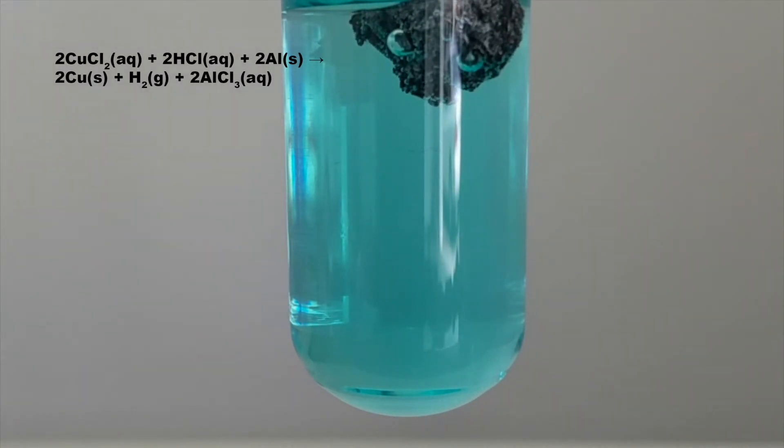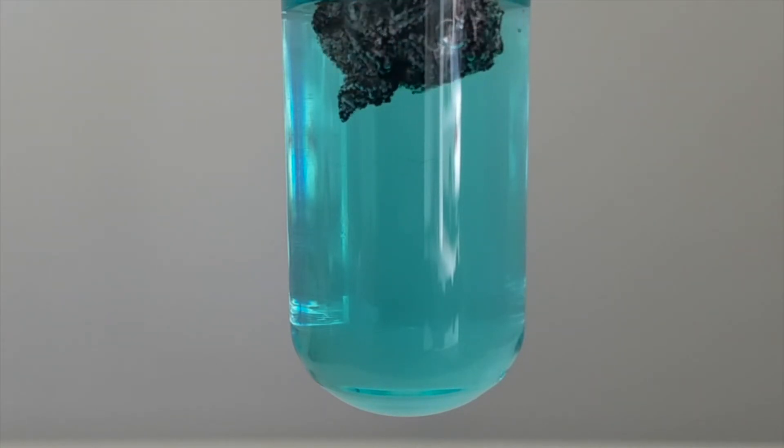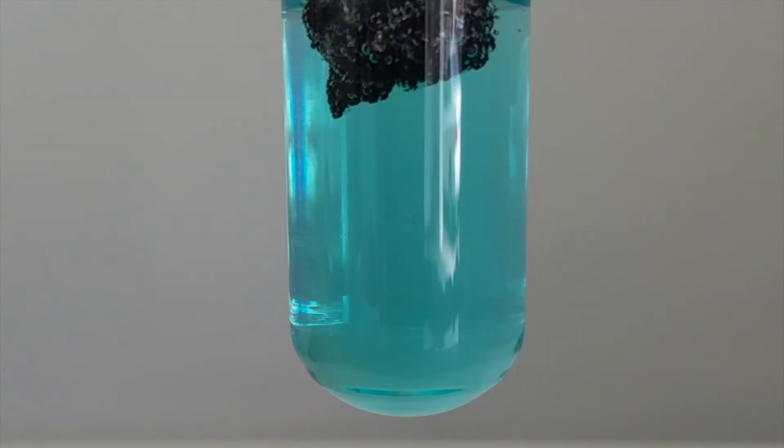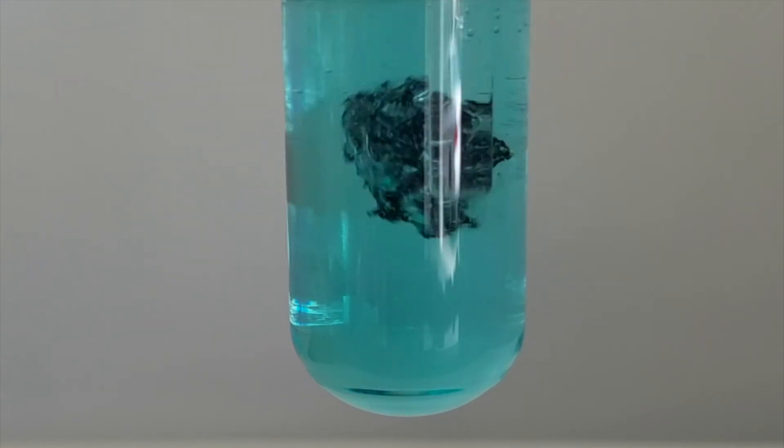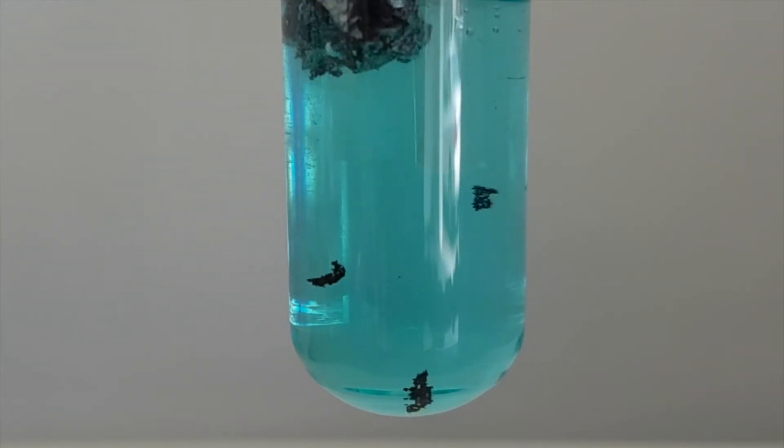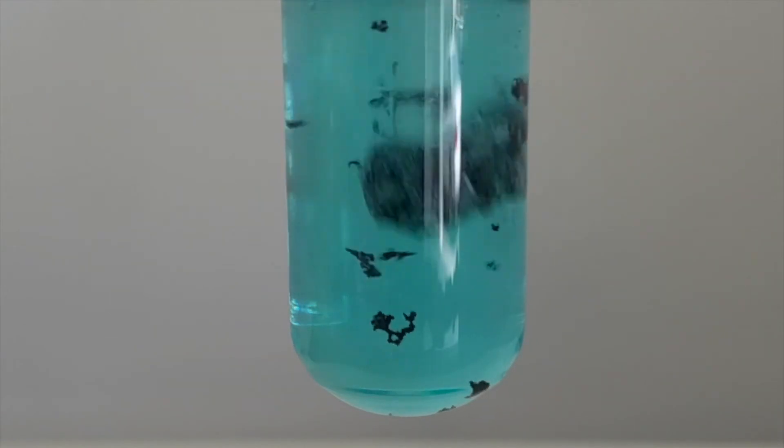Unfortunately, the glare from my window kind of disrupts the view of the reaction, but you can still see it pretty decently. When I poke it and move it around with a glass stir rod, chunks of the copper metal flake off of the aluminum and fall to the bottom. This ensures that there is definitely dissolved copper in the solution.